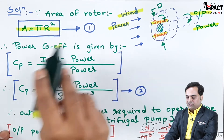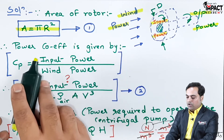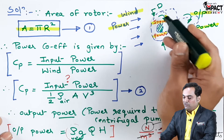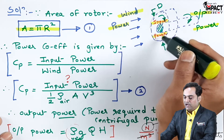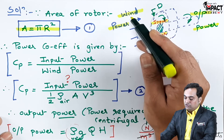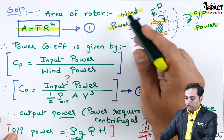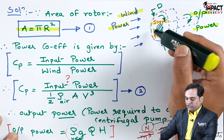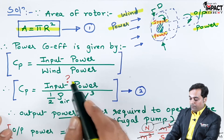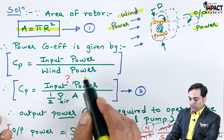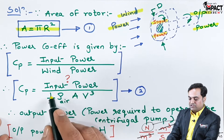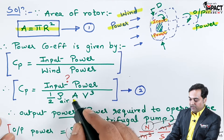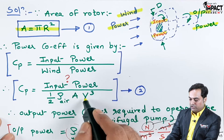The power coefficient C_P is defined as input power divided by wind power. Input power is the power available at the rotor; wind power is always greater and goes in the denominator. The formula for wind power is: Wind Power = ½ × ρ_air × A × V³, where A is the rotor area and V is wind velocity.